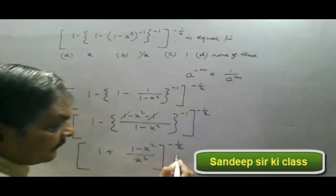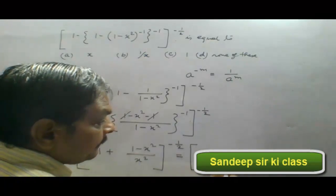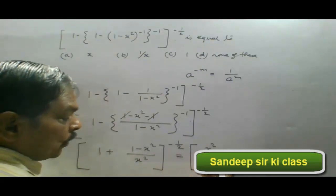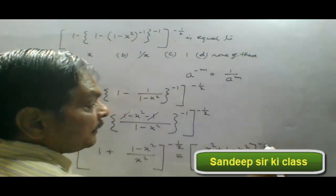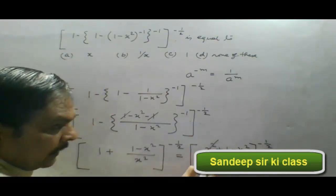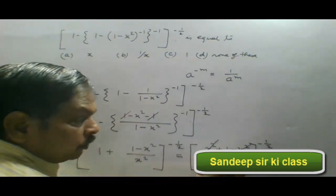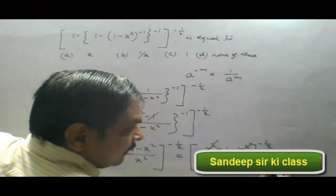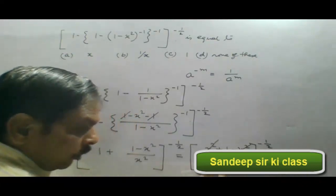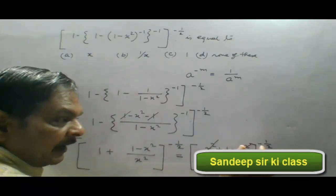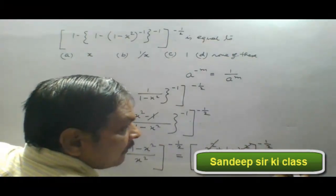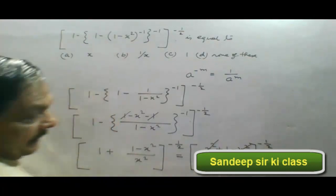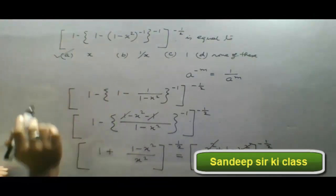So simplifying, we get 1 plus 1 minus x square upon x square, whole to the power minus 1 upon 2. Again simplifying, taking x square as LCM, we get x square plus 1 minus x square, whole to the power minus 1 upon 2. x square and x square are cancelled, leaving 1. Now 1 to the power minus 1 by 2 is 1. In the denominator, x squared with power minus 1 by 2 gives x to the power minus 1, and 1 upon x to the power minus 1 can be written as x. So option A is correct.